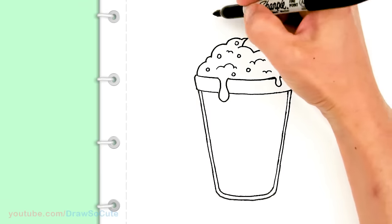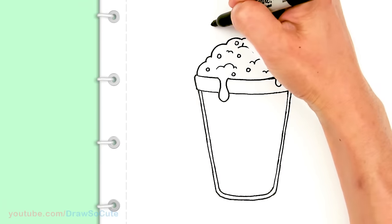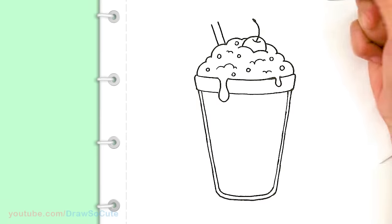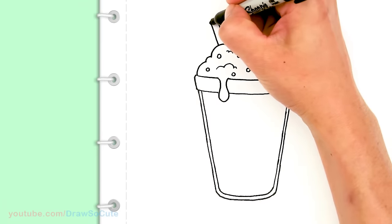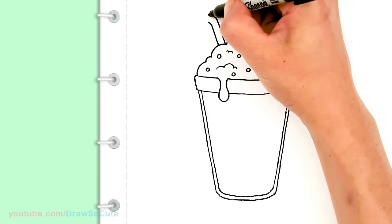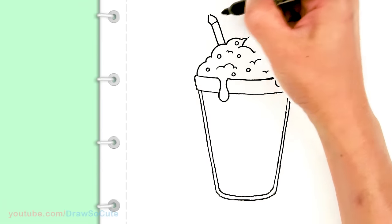Okay so then now let's draw the straw. I'm going to stick a straw out here. So I'm going to just draw two angle lines. And then I'm going to curve it. So curve this part.